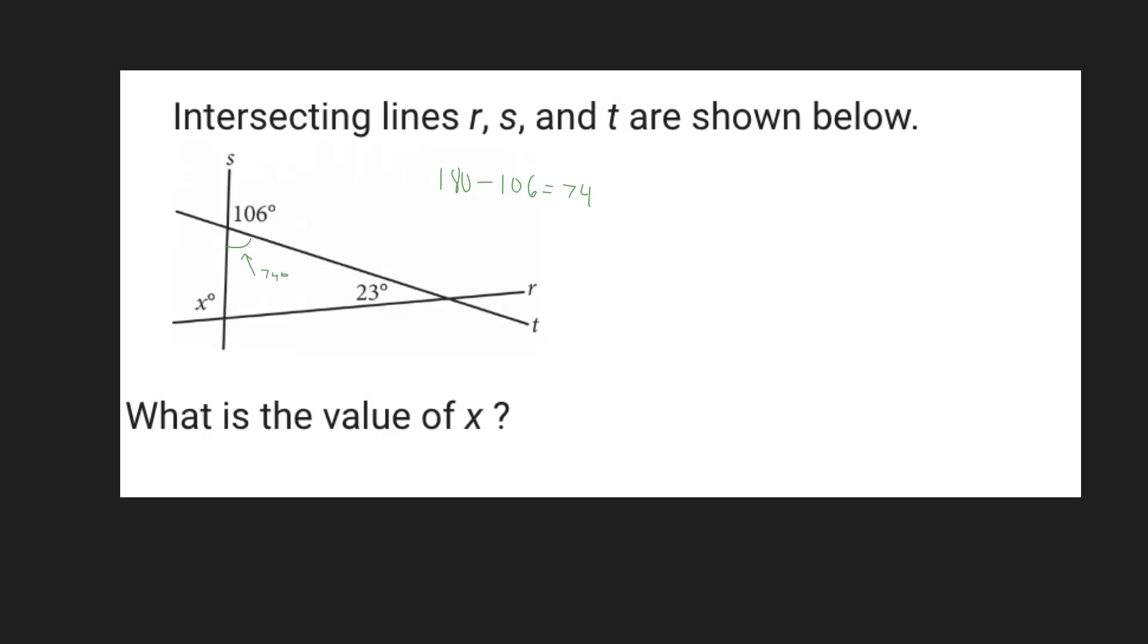And now we have two angle measures of a triangle, and so we can find the missing angle measure, right? So this angle right here at the bottom. And so we just do 180 minus 23 minus 74, and we get a value of 83.